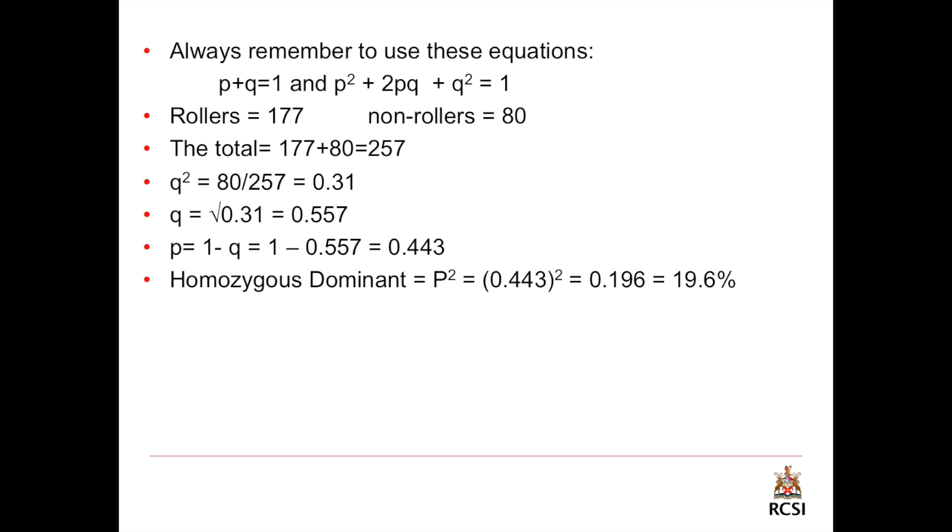To get the homozygous dominant, we need to square the p. So p squared will be equal to 0.196. To get the percentage, you should multiply it by 100, and this will give us 19.6%.